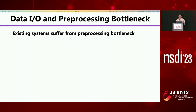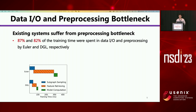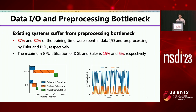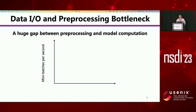Unfortunately, existing GNN training systems suffer from the data IO and pre-processing bottleneck. We profiled two representative systems, Euler and DGL. As shown in the left figure, nearly 80% of the training time was spent in data IO and pre-processing. Such long pre-processing time leads to low GPU utilization — DGL and Euler only achieve 15% and 5% GPU utilization. This low performance comes from a huge gap between the pre-processing speed and the model computation speed.